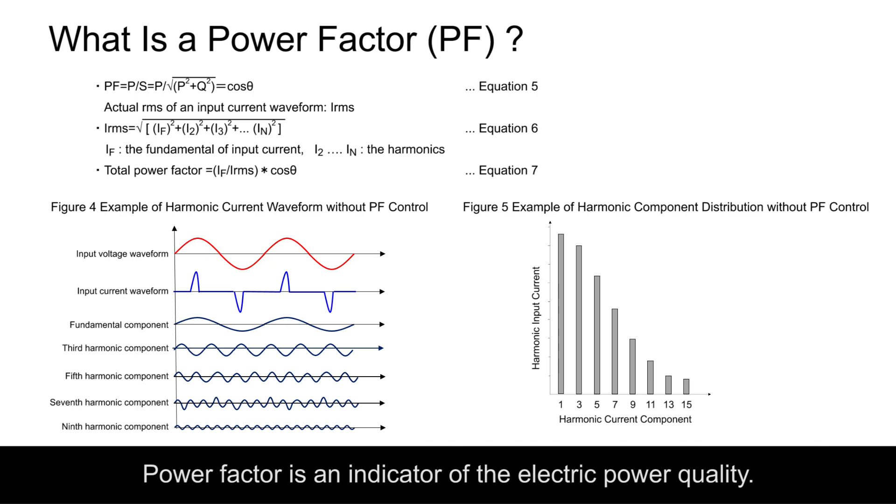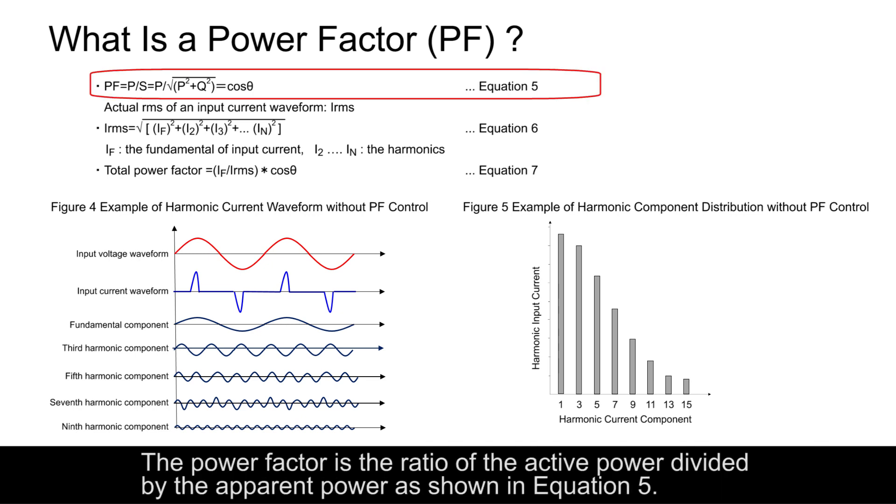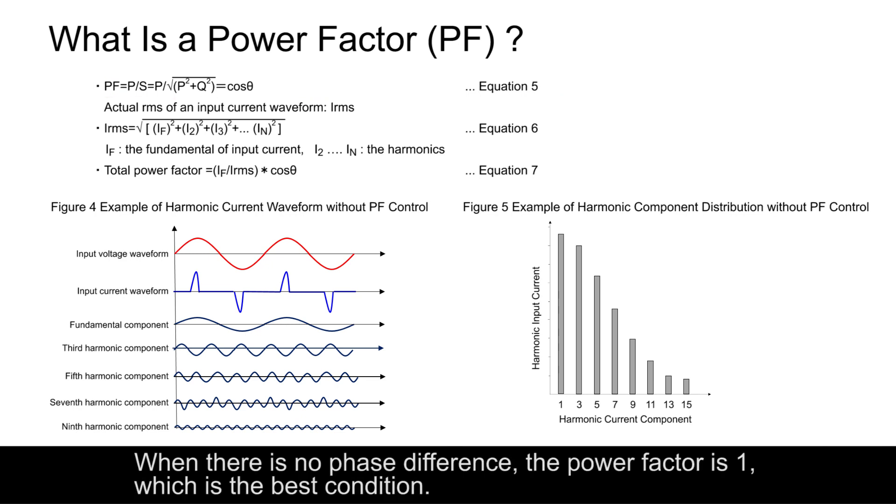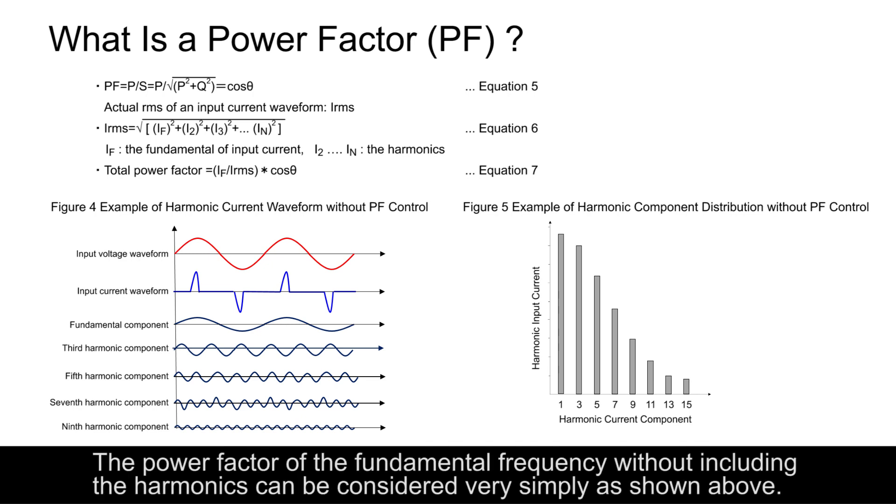Power factor is an indicator of the electric power quality. The power factor is the ratio of the active power divided by the apparent power, as shown in equation 5. When there is no phase difference, the power factor is 1, which is the best condition. The power factor of the fundamental frequency without including the harmonics can be considered very simply as shown above.